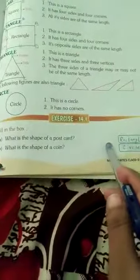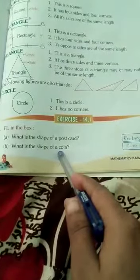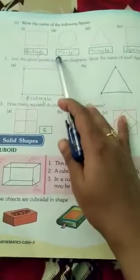Postcard ka shape is rectangular, rectangle shape. Right, rectangle. What is the shape of a coin? Coin ka shape kaisa hota hai? All of you know, circle. Write the name of the following figure.